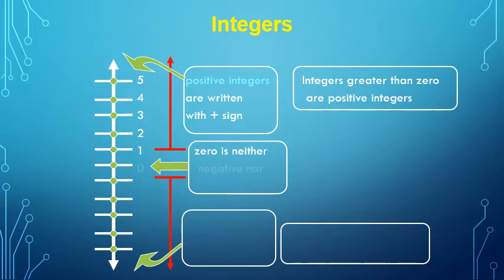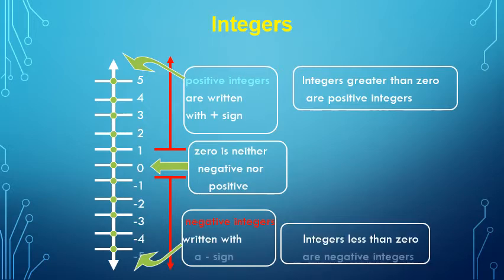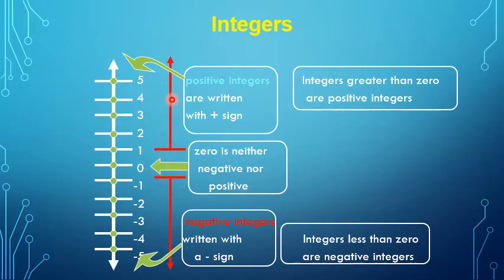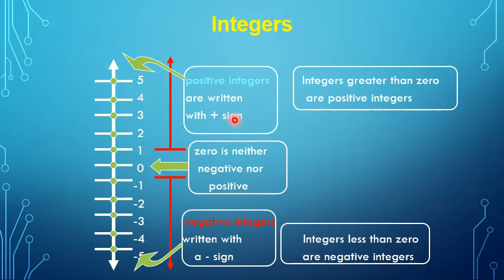Now I want to understand integers on this number line — this number line is a vertical one. Zero is neither negative nor positive; it is a special number that separates positive numbers from negative numbers. The numbers above zero are called positive integers. They can be written with a positive sign or without one. These integers above zero are greater than zero and they are positive integers.